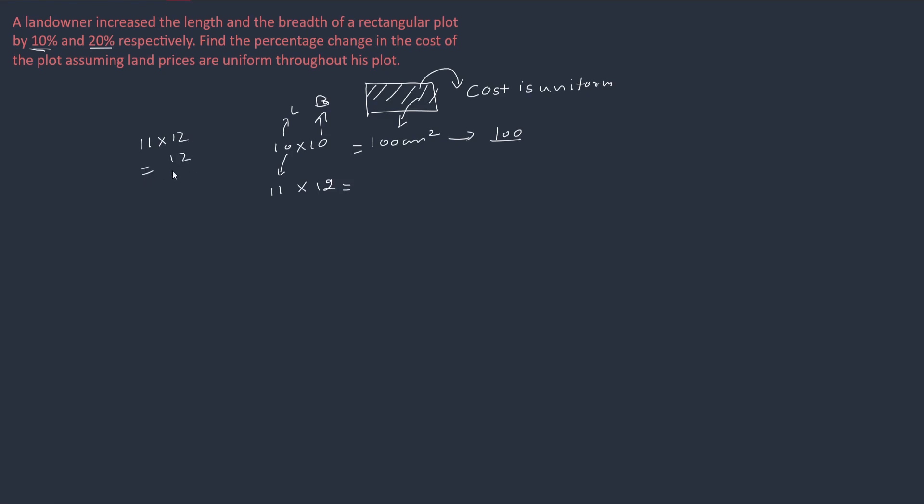So this is equal to 132 cm square. So 132 cm square means 132 new cost.